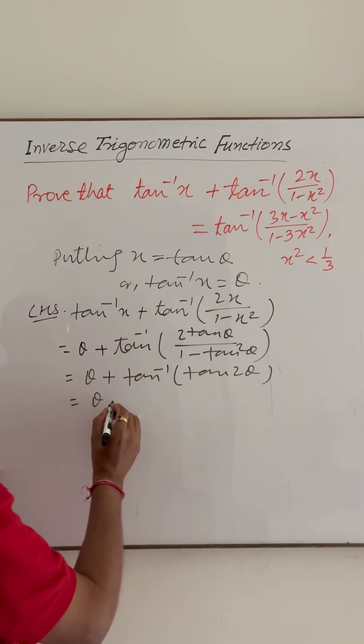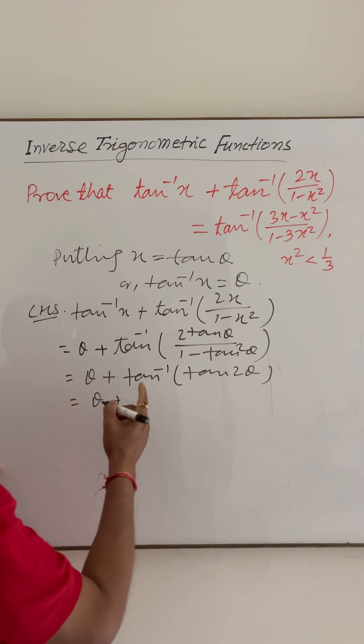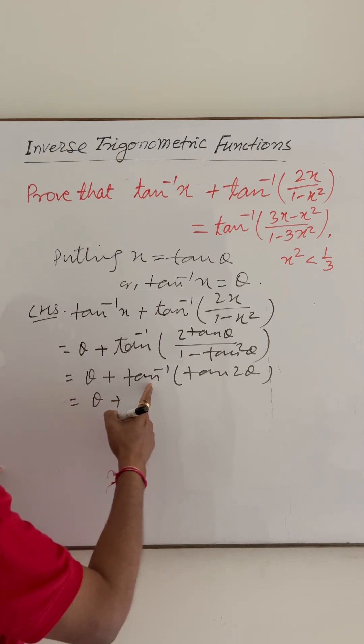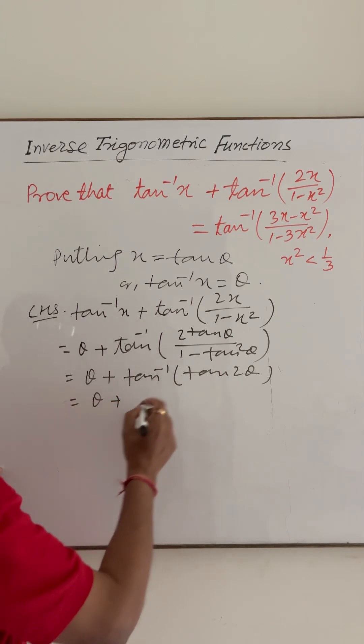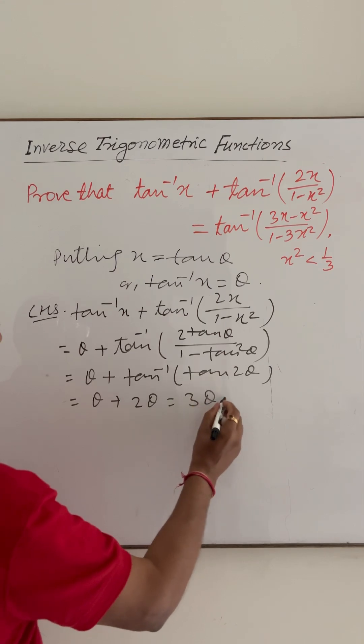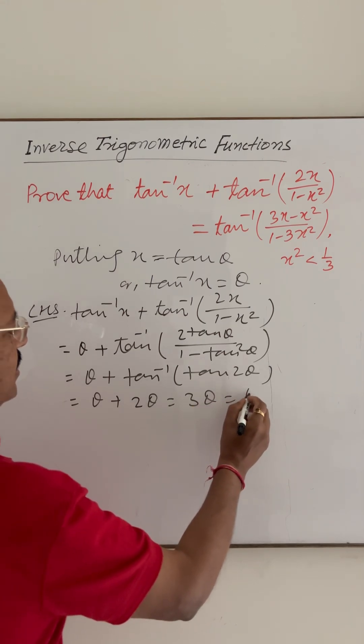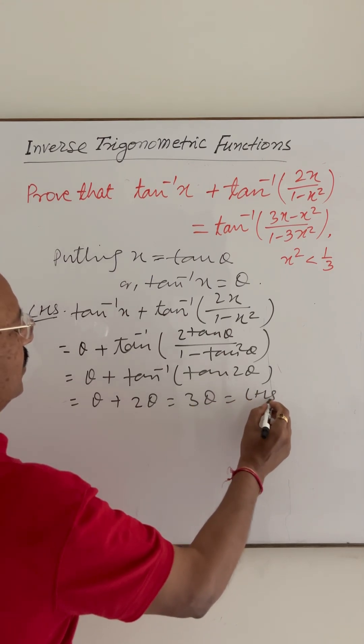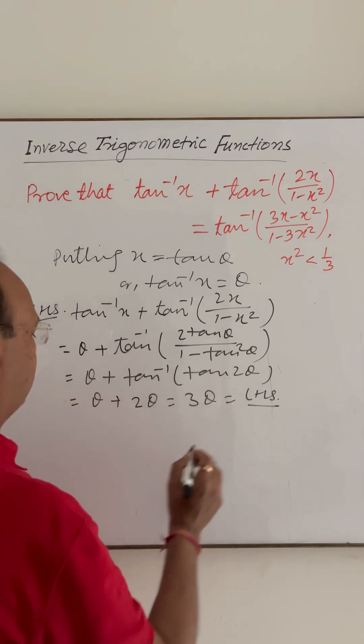Therefore, tan inverse of tan 2 theta equals 2 theta, giving us theta plus 2 theta equal to 3 theta. This is the value of the left hand side.